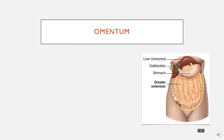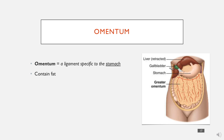Coming on to the omentum — omentum literally means apron. It is a ligament, something that connects two bits of viscera, and it is specific to the stomach. It is quite important because it contains a lot of fat, which protects against injury.